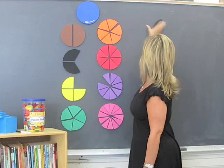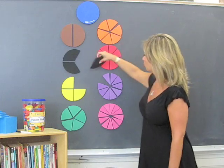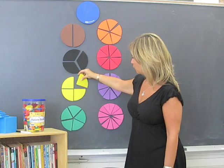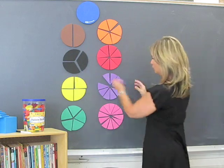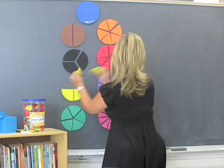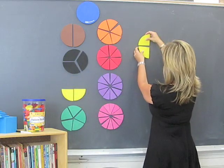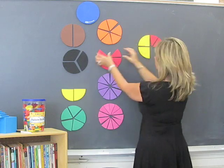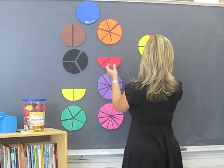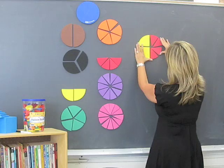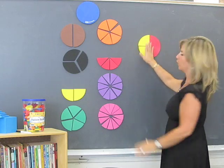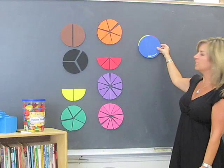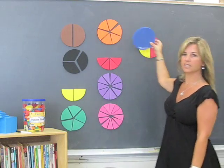Another cool thing you can do with the fraction circles is to add fractions. So if I were going to add 2 4ths plus 4 8ths, the kids could see that 2 4ths plus 4 8ths equals 1 whole. And they can actually take the whole and see that it is exactly the same.